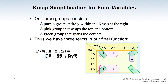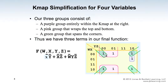For the second pink group, W changes from zero to one so W is dropped. X stays the same at zero, so we keep X-not. Y has the same value of zero but Z changes from zero to one, so Z is dropped. The pink group is therefore represented by X-not and Y-not.